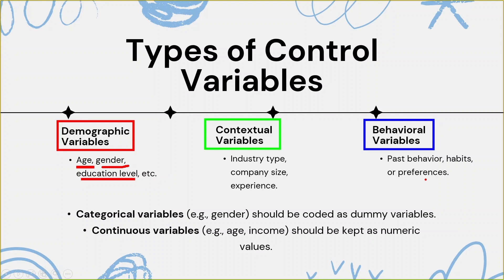There are two types of control variables: one is categorical and another is continuous. For example, gender — male or female — can be coded as a binary variable, 0 or 1. Categorical variables should be coded as dummy variables. Please keep in mind: if you use a categorical variable like gender, you should code it as a dummy variable with 0 and 1.